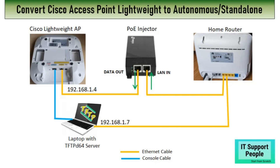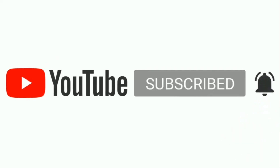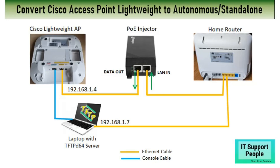So let's get started. Please don't forget to subscribe to my channel and press the bell icon so that you'll be notified about all the latest videos I'll create in future. Let me describe the network topology. Here I have used one home router, a POE injector, the Cisco lightweight AP, and a laptop with a TFTP server. If you want, you can use a Cisco router, but the condition is the Cisco lightweight AP and the laptop with the TFTP server must be on the same network.